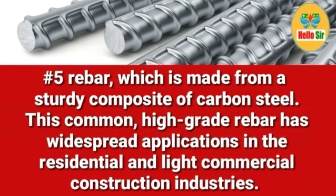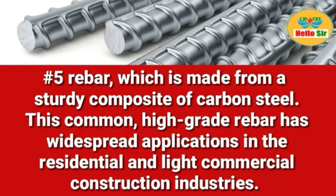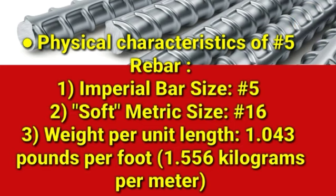Number five rebar is made from a composite of carbon steel. This common high-grade rebar has widespread application in the residential and light commercial construction industry. Now discussing physical properties: the imperial bar size designation is number five, denoted by H5, and the metric equivalent size is number 16, denoted by H16.